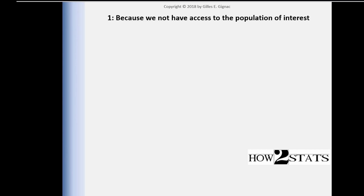What we do with those samples of data is that we calculate values from which we infer those results to the population. We conduct research typically because we want to infer, we want to make decisions, we want to make conclusions about how the world works or how it's different between people or related.